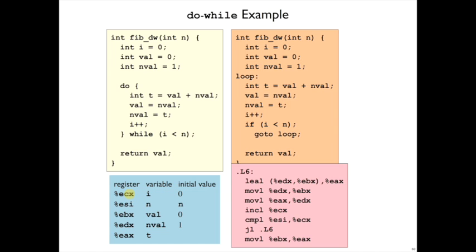It turns out in this scenario that the ECX register holds i, ESI holds n, EBX holds val, EDX has nval, and EAX has the result of this intermediate addition.